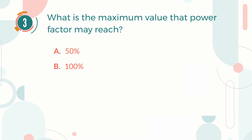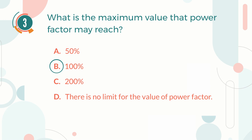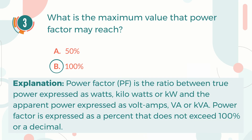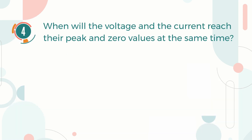Number three: What is the maximum value that power factor can reach? A) 50%, B) 100%, C) 200%, D) There is no limit for the value of power factor. The correct answer is B, 100%. Power factor is the ratio between true power expressed as watts or kilowatts and the apparent power expressed as volt-ampere or kilovolt-ampere. Power factor is expressed as a percent that does not exceed 100%.